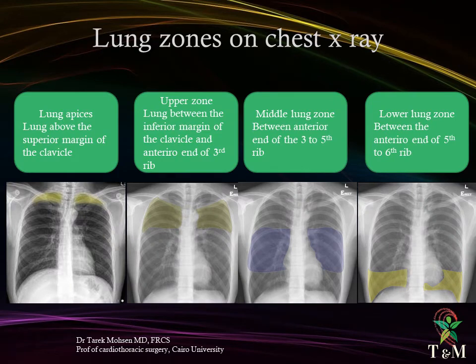Normal structures on chest x-ray include: airways, right and left hemithorax, mediastinum, heart and great vessels, diaphragm, pleura, and thoracic cage. Lung zones on chest x-ray: lung apices, upper, middle, and lower zones. The lung apex lies above the superior margin of the clavicle. The upper zone lies between the inferior margin of the clavicle and the anterior end of the third rib. The middle lung zone lies between the anterior end of the third to the fifth rib. The lower lung zone lies between the anterior end of the fifth to the sixth rib.